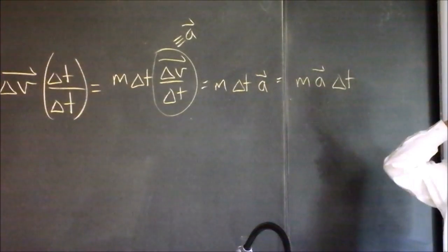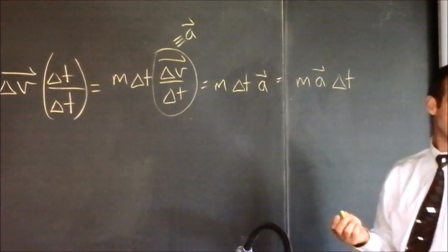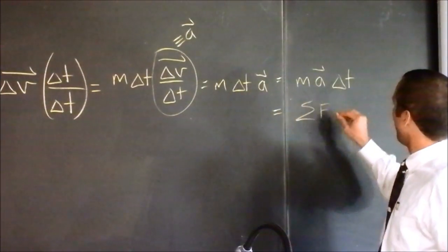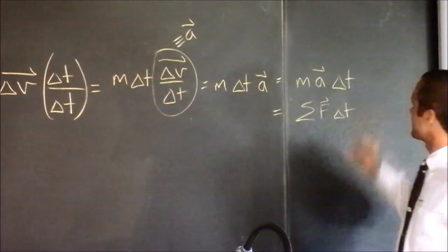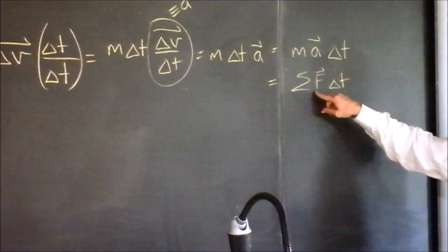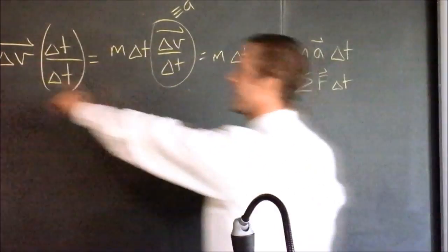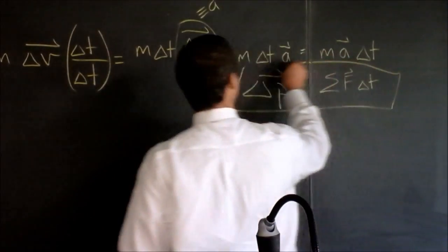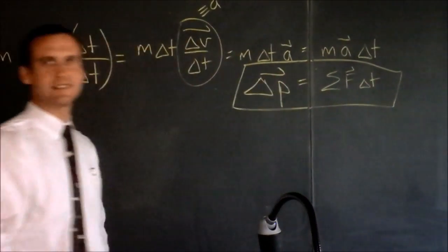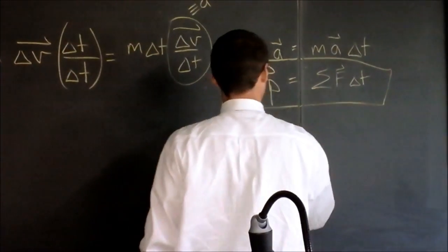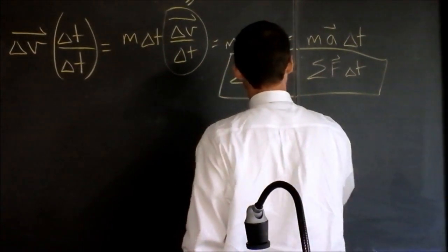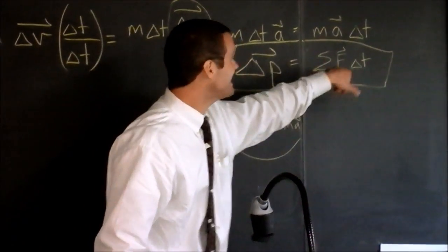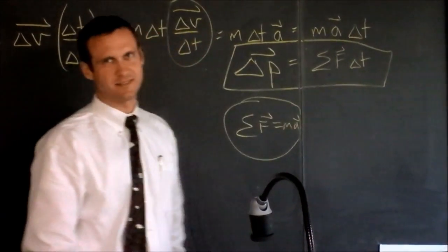What is mass times acceleration? Force — net force. So this is the net force times time. This says add up all the forces over time, and that is what impulse is. It's also change in momentum. And this is what Newton wrote as his second law. We write net force as mass times acceleration, but Newton wrote change in momentum equals net force times time. This is not calculus-based yet.